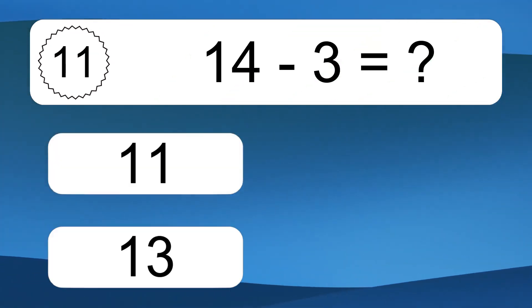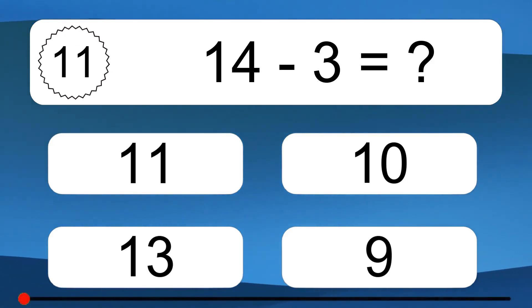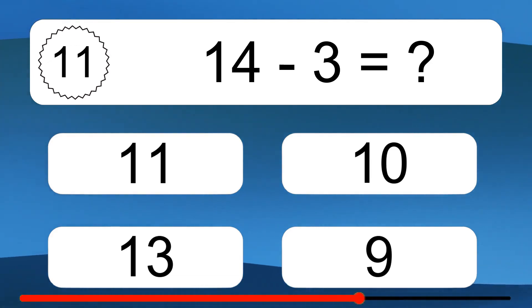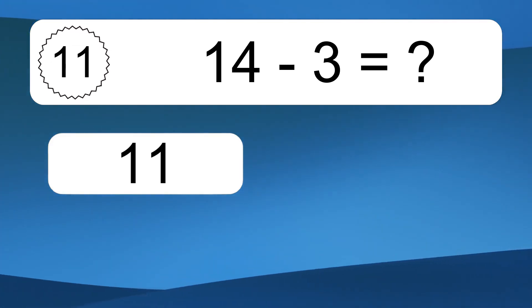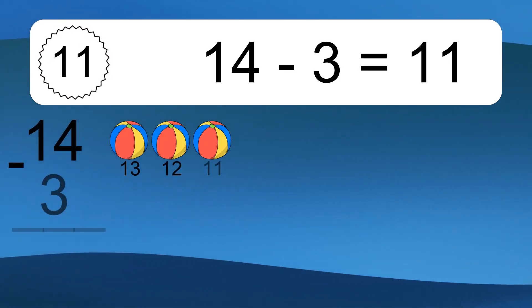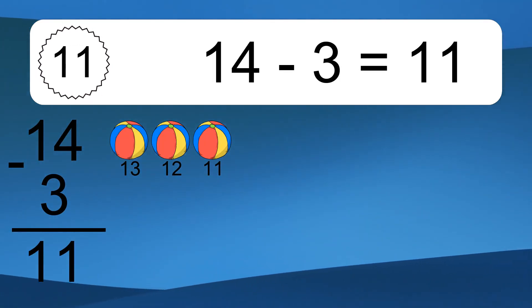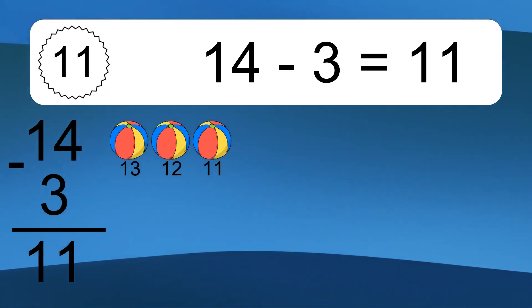14 minus 3 equals what? 14 minus 3 equals 11. Let's count it. 13, 12, 11.